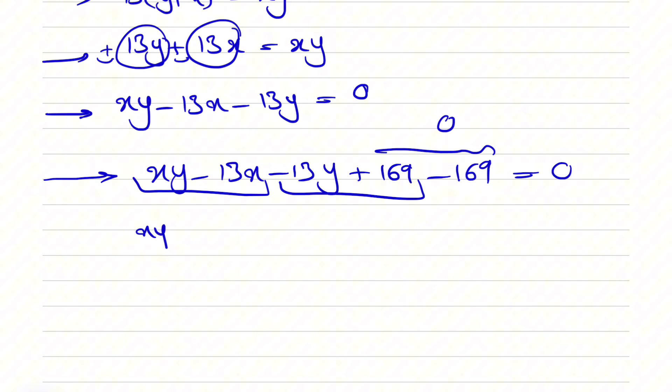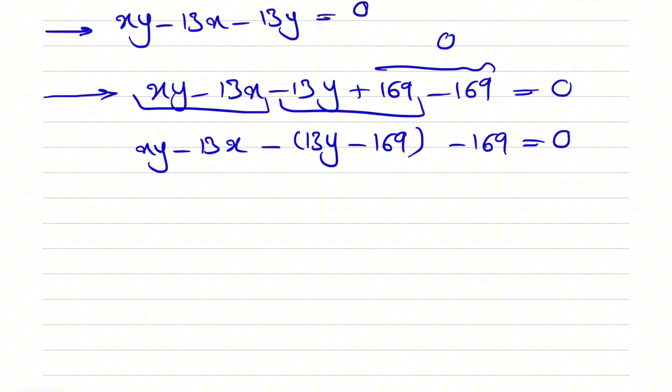So from the first one, we have exactly what we had in the previous step xy minus 13x. And in the other one, if you factor negative sign, we have 13y minus 169 and we have minus 169 without any changes here. So we're going to bring back the 169 on the right side, which will be positive. So from these two, we can see the common factor x. And in these two, since 169 is 13 times 13, we can factor 13 in the second one.